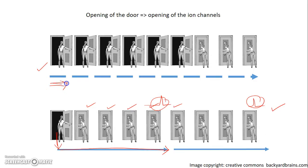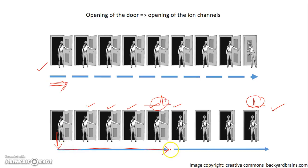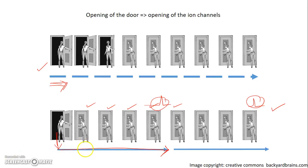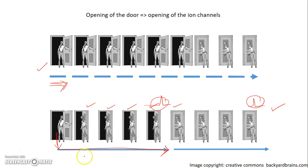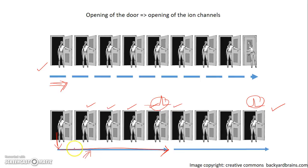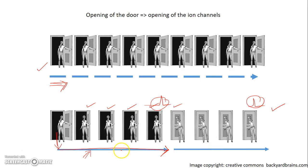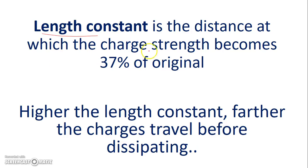In the first case the charges could spread only a shorter distance, and in the second case for a much longer distance. There is a term called the length constant, which is used to describe how far the charges are going to spread. The length constant is the distance at which the charge strength becomes 37% of the original. The higher the length constant, the farther the charges travel before dissipating, so the action potential conduction velocity is much higher with a higher length constant.